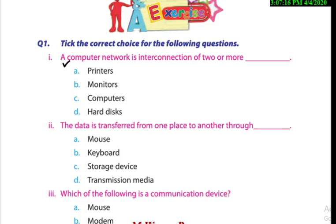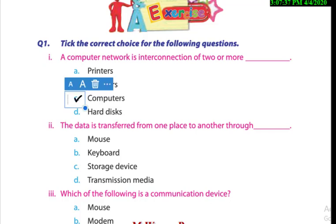The first MCQ is: a computer network is an interconnection of two or more — what? When we join devices to form a complete network, do we need printers, monitors, or hard disks? No — we need two or more computers to form a network connection. So tick option number C.